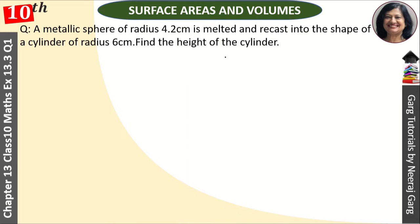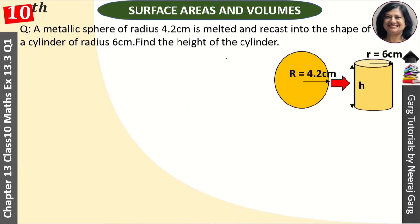A sphere is melted and we have to make a cylinder. This is our diagram. The sphere has radius 4.2 cm and the cylinder has radius 6 cm.